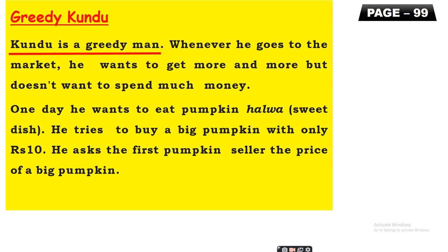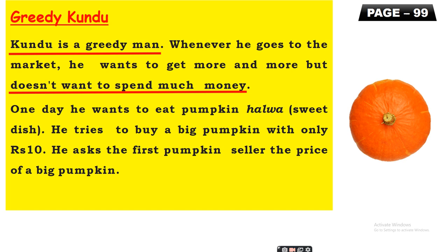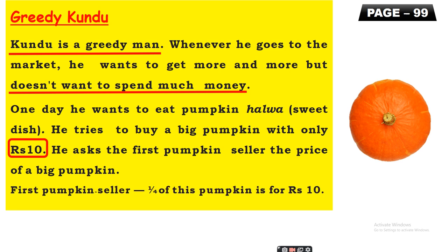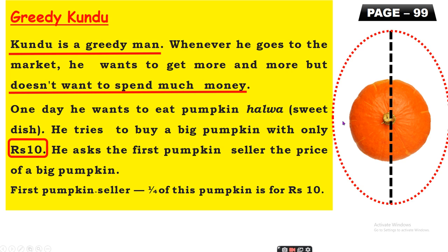Kuddu is a greedy man. He wants to get more and more but does not want to spend much money. One day he wants to eat pumpkin halwa — a sweet dish. He tries to buy a pumpkin with only rupees 10. He asks the first pumpkin seller the price of a big pumpkin. The first seller says one-fourth of this pumpkin is rupees 10 — meaning the pumpkin is cut into four equal parts and each share costs 10 rupees.